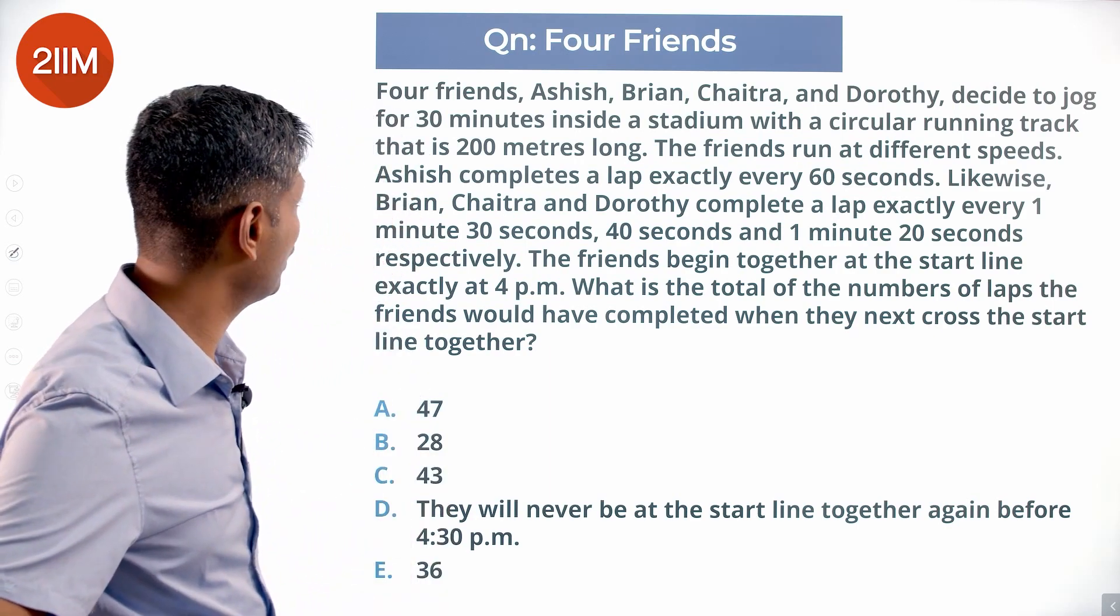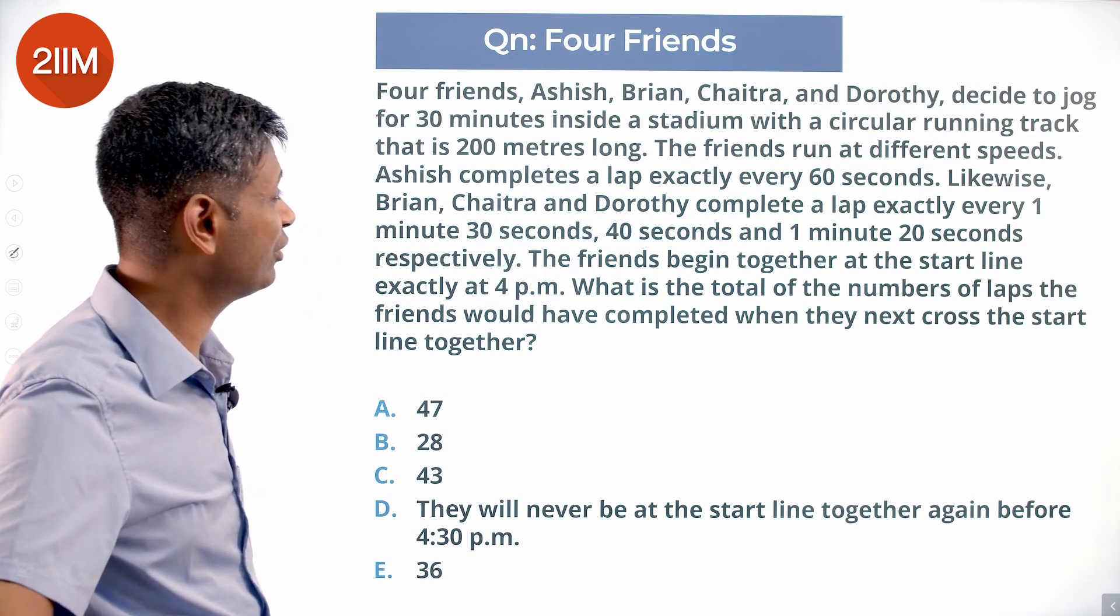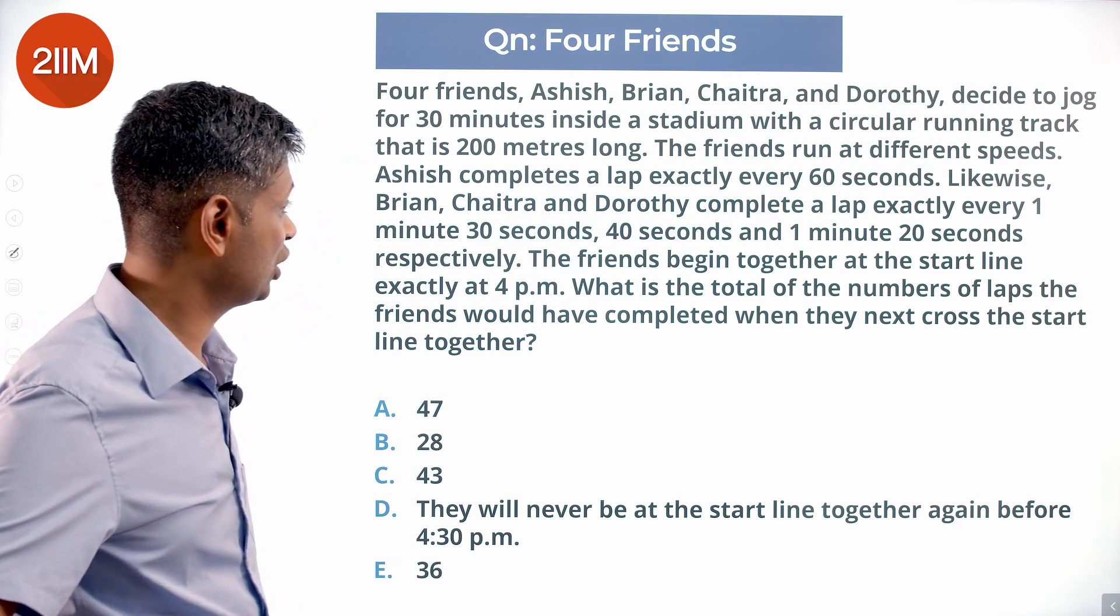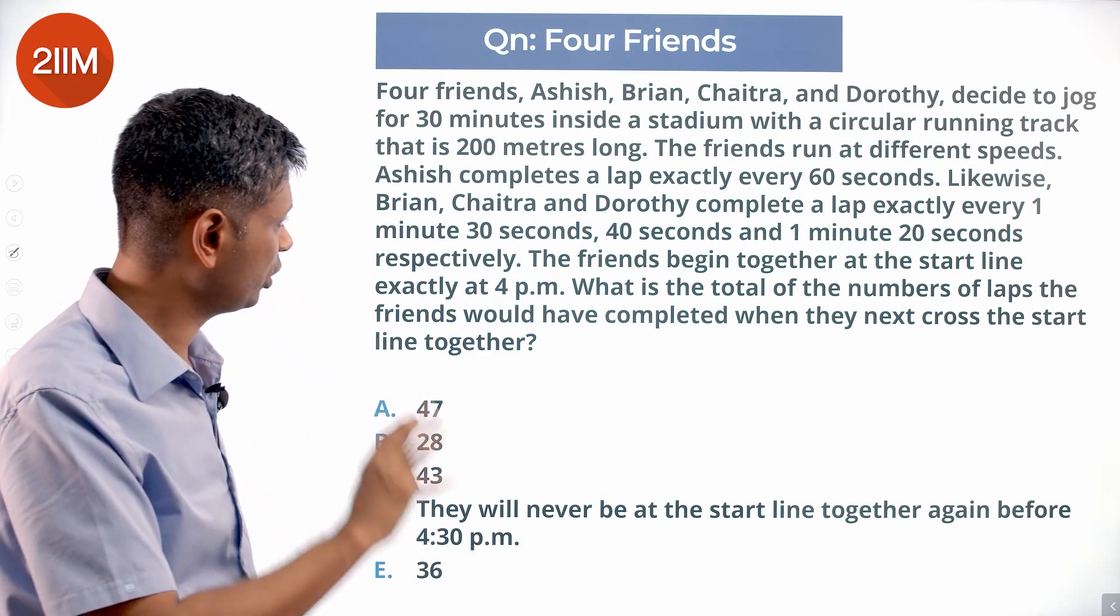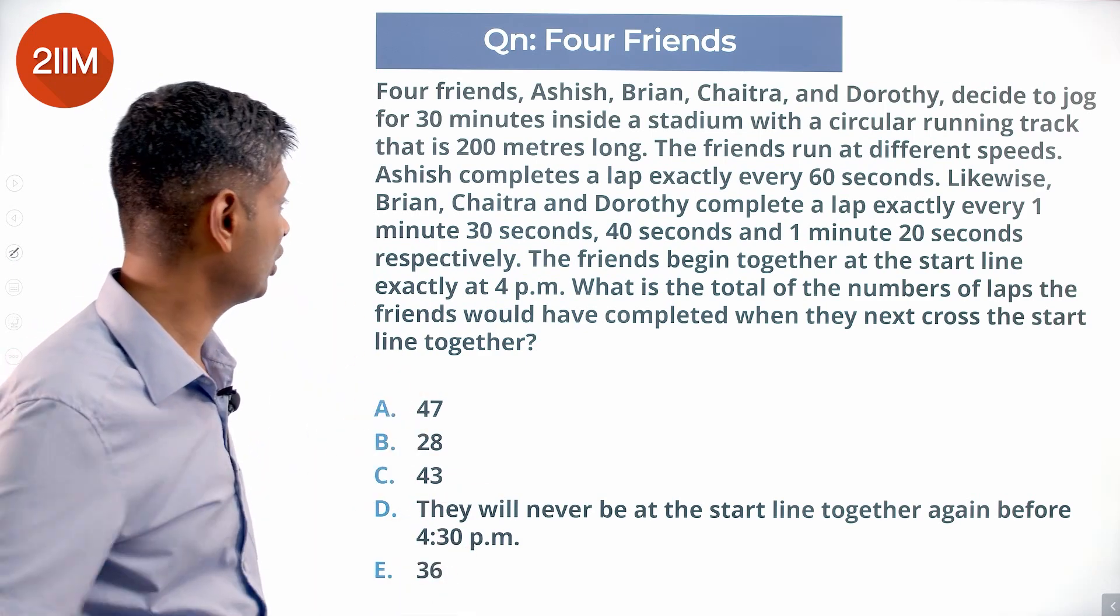The friends run at different speeds. Ashish completes a lap every 60 seconds. Likewise, Brian, Chaitra and Dorothy complete a lap exactly 1 minute 30 seconds, 40 seconds and 1 minute 20 seconds respectively.